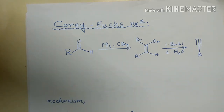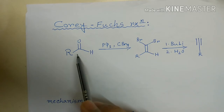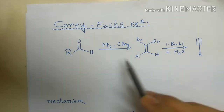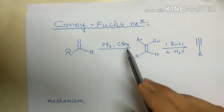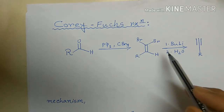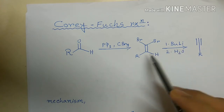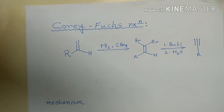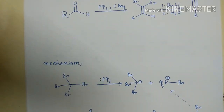Welcome guys. Today we will discuss the Corey-Fuchs reaction. The Corey-Fuchs reaction is the transformation of an aldehyde to a terminal alkyne. The reagents used are triphenylphosphine and tetrabromomethane in the first step. In the second step, after formation of the alkene intermediate, we treat it with butyl lithium followed by hydrolysis to give the alkyne product.